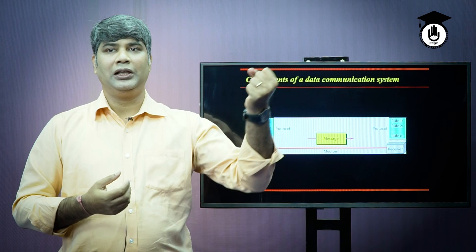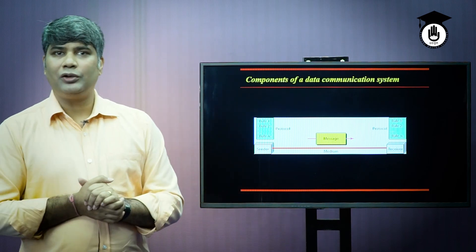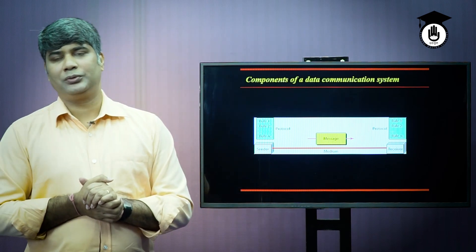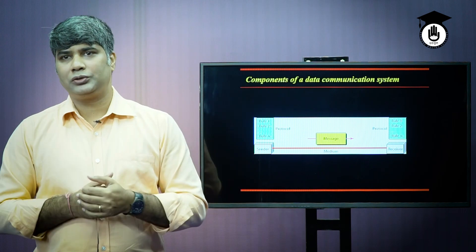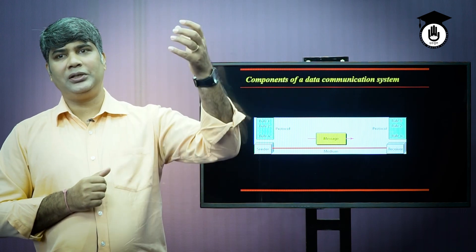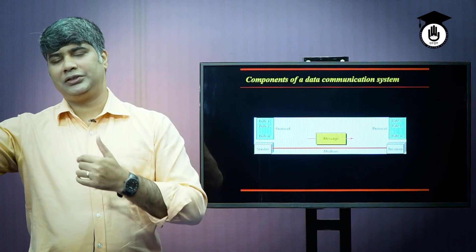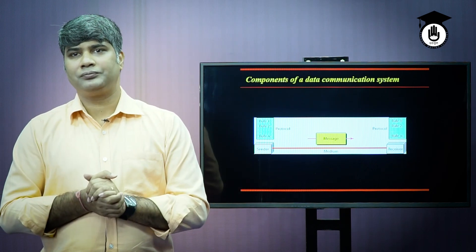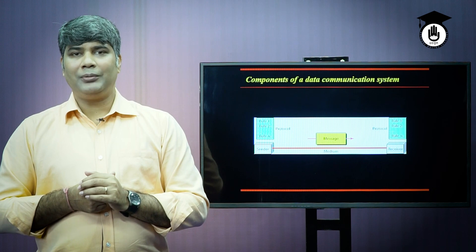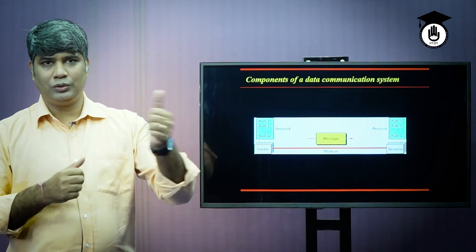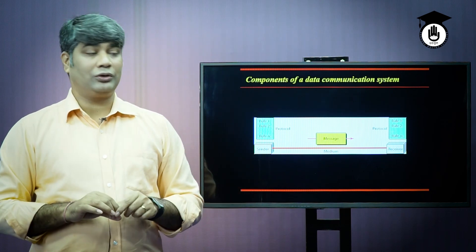The first component is the sender, the receiver, and the communication medium. These three things are the core components. We also have a source address and destination address, a communication link, and a communication channel.